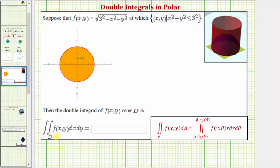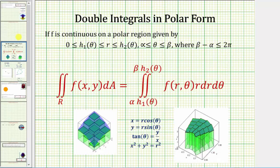Next, we're converting a double integral in rectangular form to polar form. We need to write the function f(x, y) as f(r, θ), using our conversion formulas. The differential dA, which in rectangular form is dx dy or dy dx, converts to r dr dθ in polar form. It's important to remember we have that extra factor of r when converting to polar form.